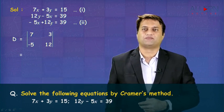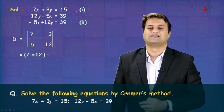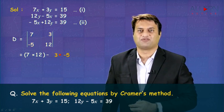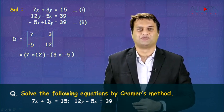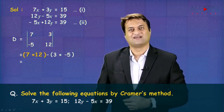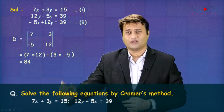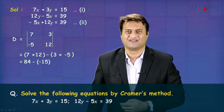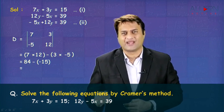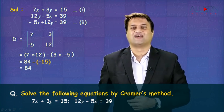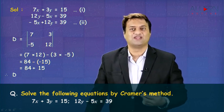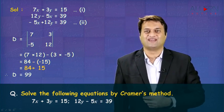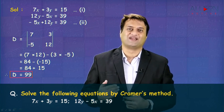Now, let us cross multiply. In the first bracket, you will get 7 into 12. Second bracket is 3 into minus 5 with a minus sign in between. 7 and 12 are 84, the minus sign and 3 into minus 5 is minus 15. So it is 84 minus of minus 15, that is 84 plus 15. 84 plus 15 is 99. So your D is equal to 99.